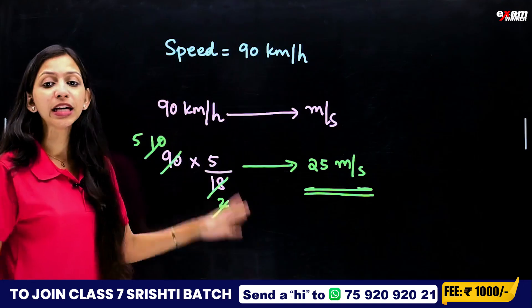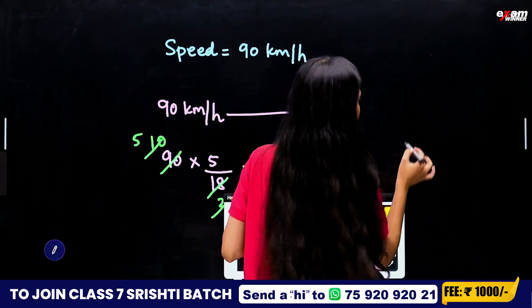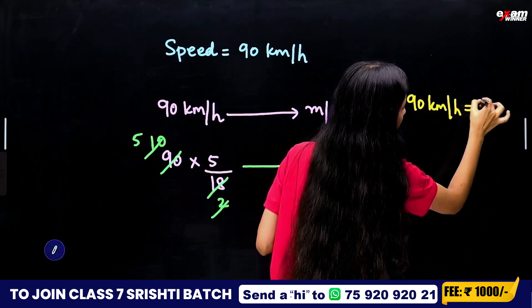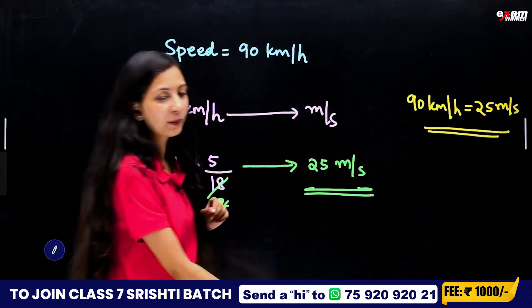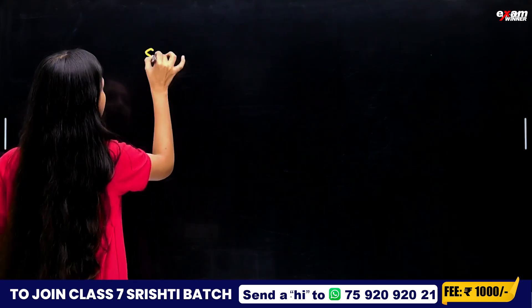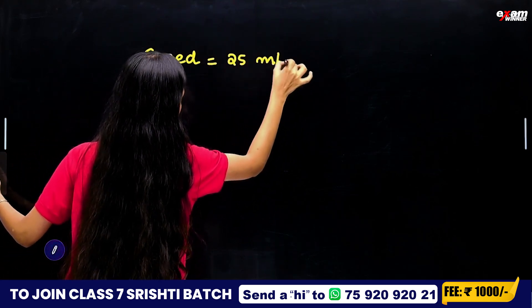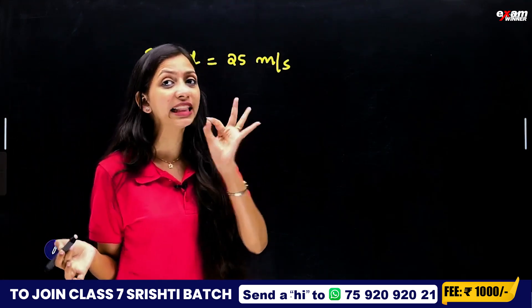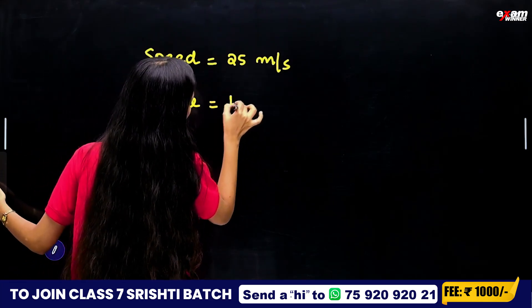Do you know what 25 meters per second means? 90 km per hour is equal to 25 m per second. Now, the speed is 25 m per second. How much time? One second.